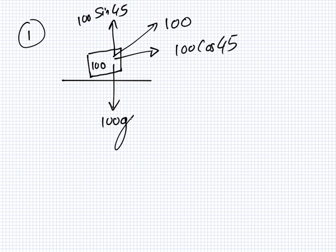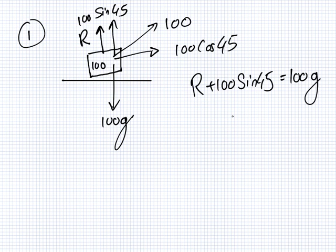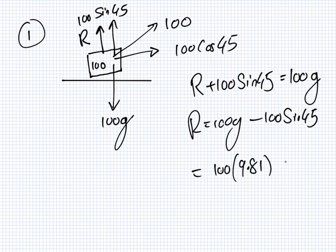What is the value of the reaction force between the block and the ground? Okay, so we have 100 cos 45, and 100 sine 45, and here is 100 G. And also, of course, R.